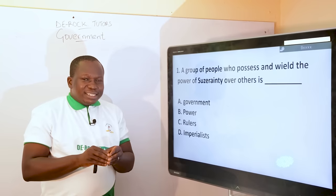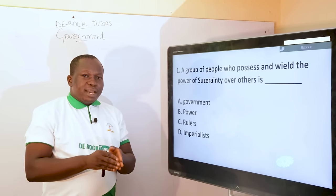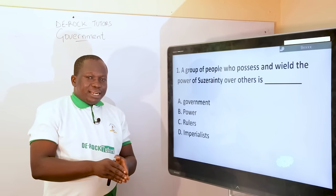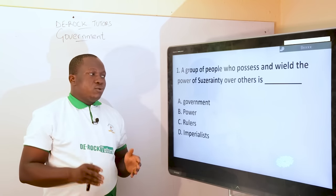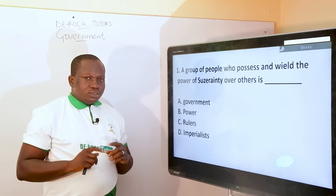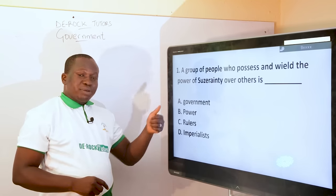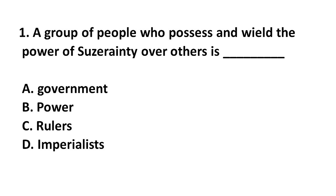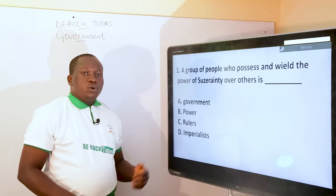Britain granted Nigeria limited self-rule at the regional level, whereby we had premiers at the regional level, but we were not yet independent. So suzerainty has to do with something like colonialism, something like imperialism. Looking at the options, the answer won't be governments, power, or rulers — it will be imperialist. If you don't come across imperialist, it can also mean colonialist.